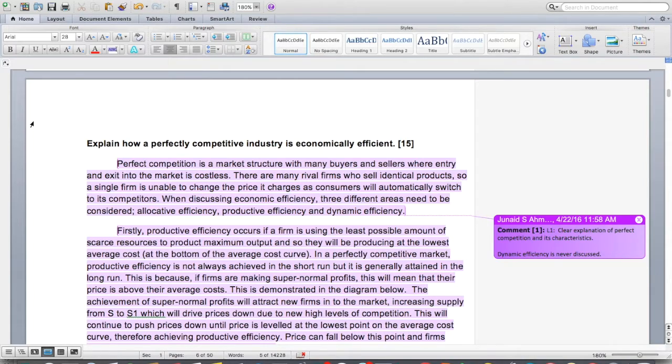Perfect competition is a market structure with many buyers and sellers where entry and exit into the market is costless. There are many rival firms who sell identical products, so a single firm is unable to change the price it charges as consumers will automatically switch to its competitors. When discussing economic efficiency, three different areas need to be considered: allocative, productive, and dynamic.